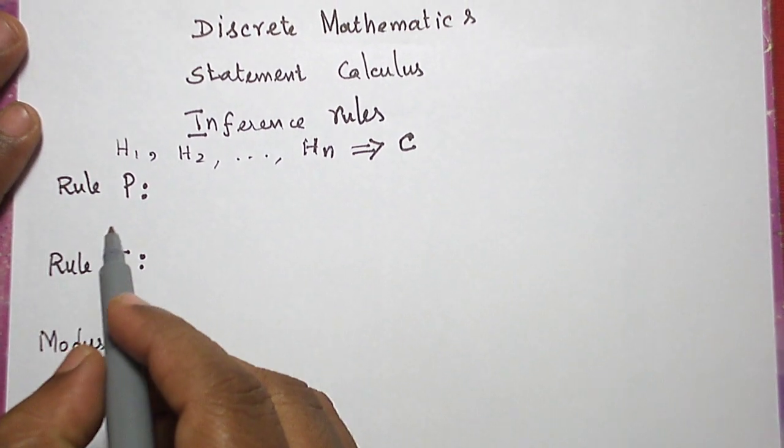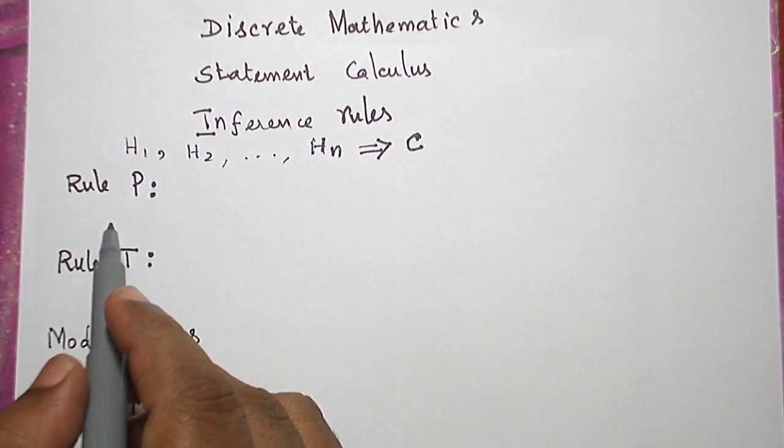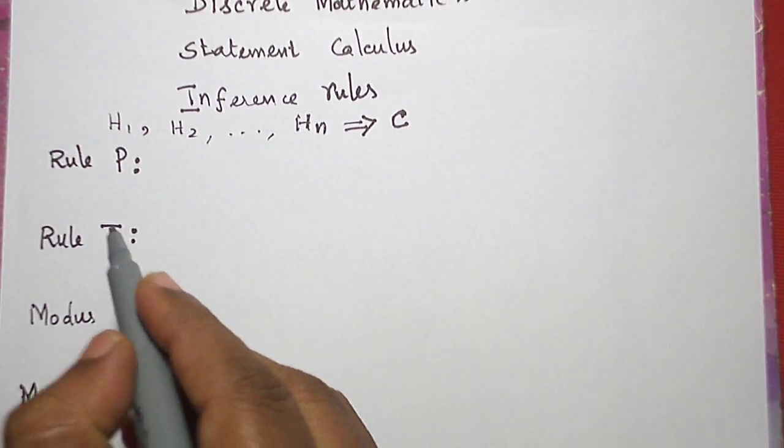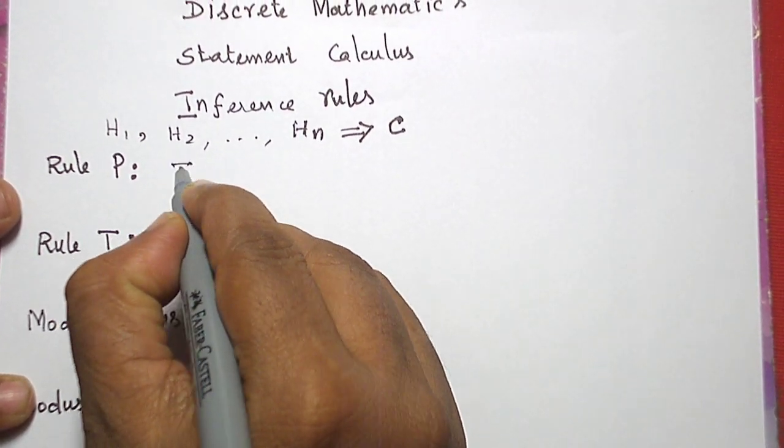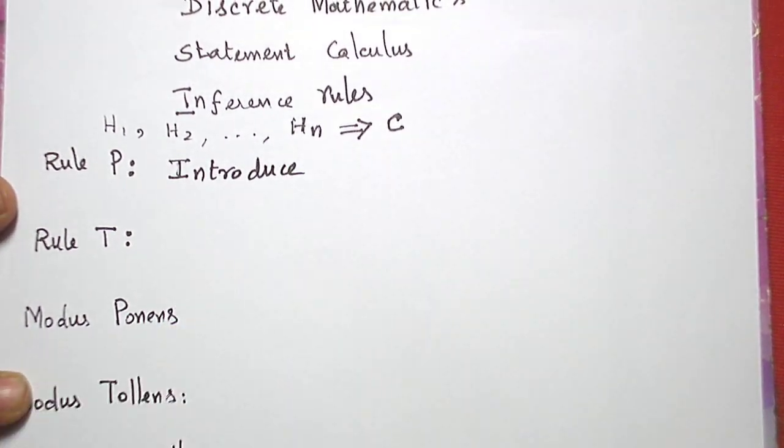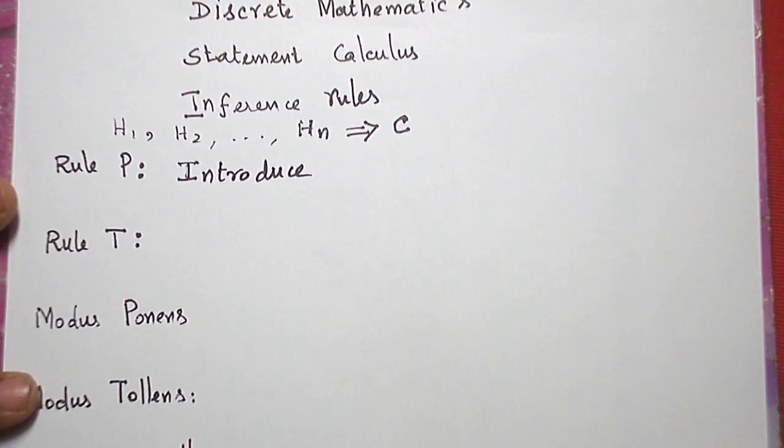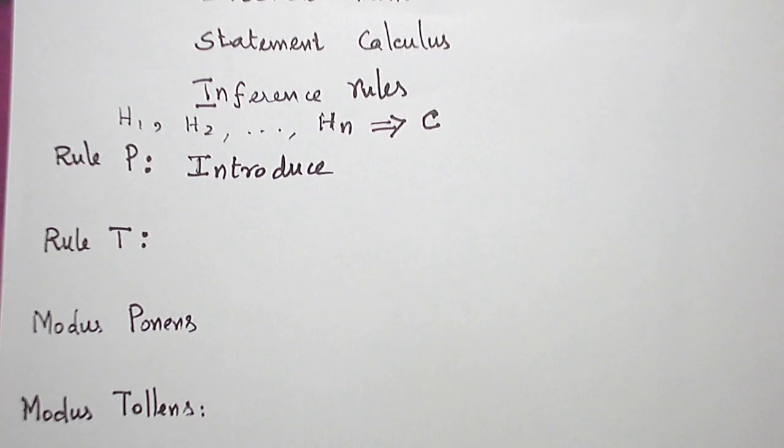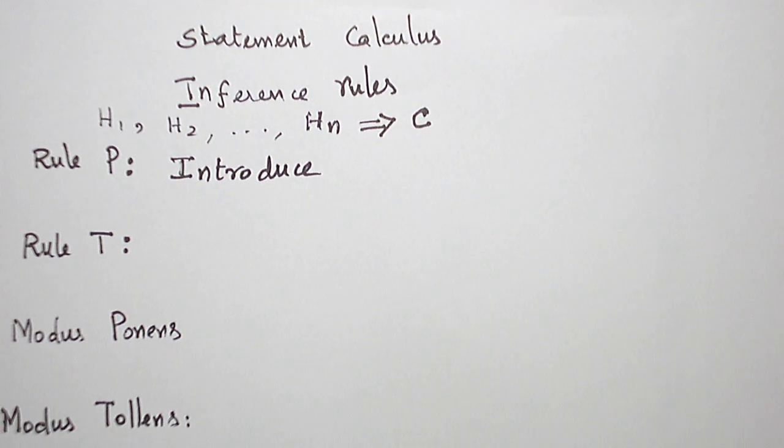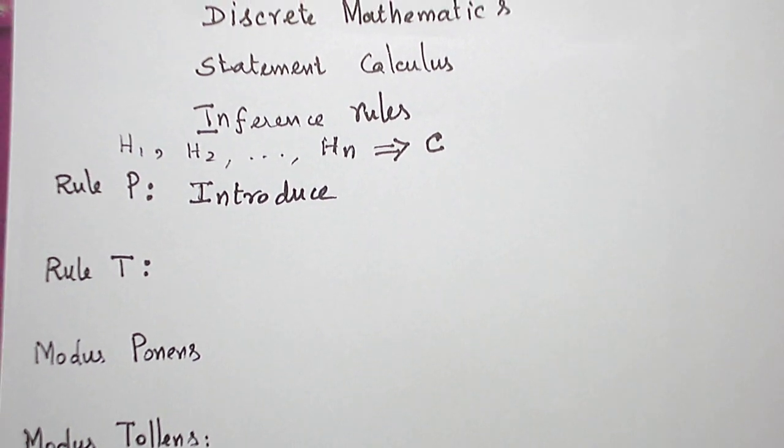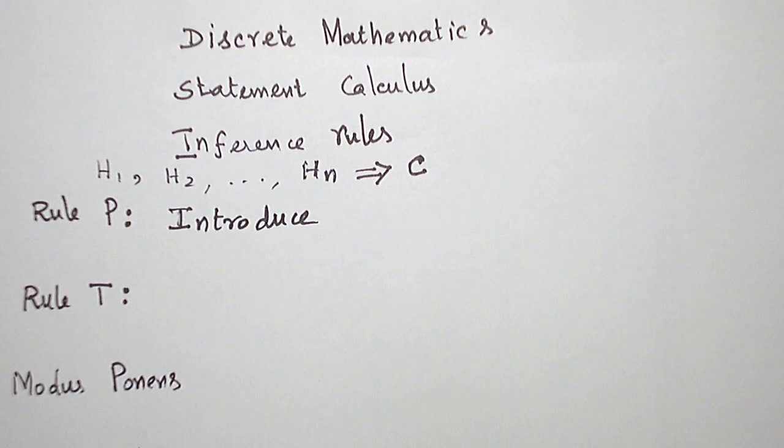First of all, basically we are going to use two rules. One is rule P and another is rule T. Rule P is used to introduce a statement formula given as a premise at any point of the derivation. At any point of our argument, we shall introduce any given premise as rule P. And we have to use rule P only one time for one formula.